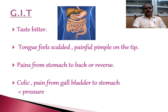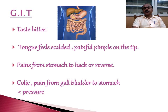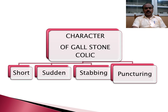Berberis Vulgaris also has an action on the liver. When the liver is involved, the GIT is affected: the taste is bitter, the tongue feels seared, there are painful pimples on the tip of the tongue, pains from the stomach to the back or reverse. It is a remedy not to be forgotten for colicky pain from the gallbladder to the stomach, aggravated by pressure. The character of gallstone colic is short, sudden, stabbing, and puncturing pain that radiates in different directions.